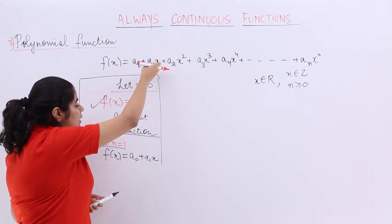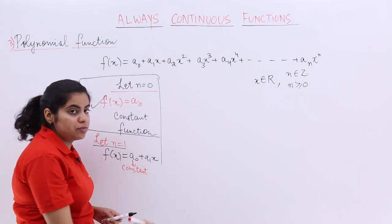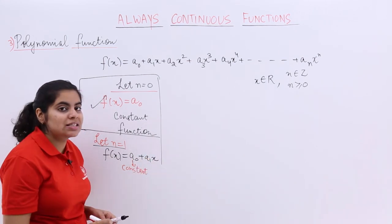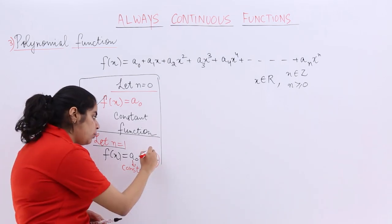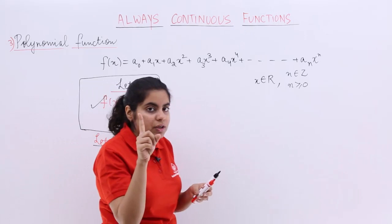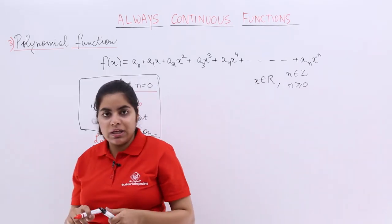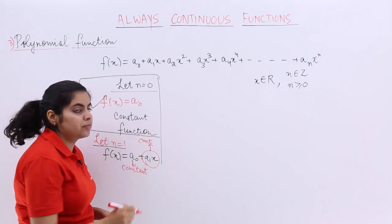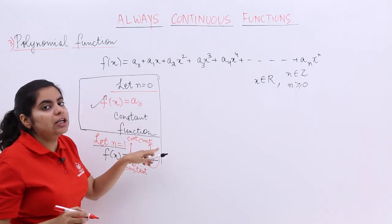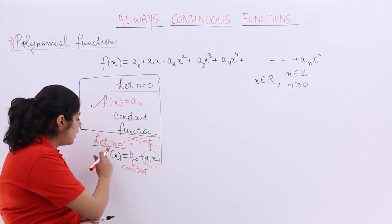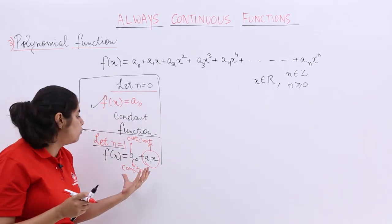Now, a₀ plus a₁x — a₀ is a constant function, and a₁ is a constant while x is identity. So this is the product of a constant and identity — product of two continuous functions. Constant function is continuous everywhere, identity function is continuous everywhere, so their product is also a continuous function. And constant function is also continuous. Continuous plus continuous is always continuous. So f(x) when n equal to 1 is also continuous because it is the sum of two continuous functions.